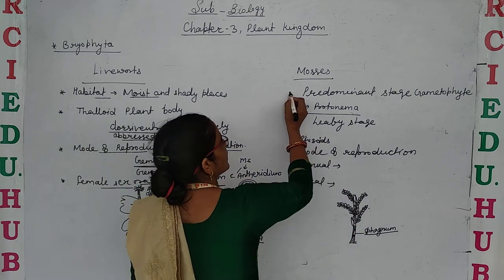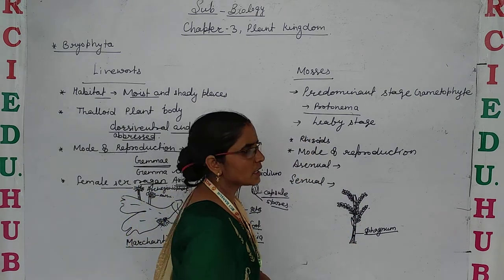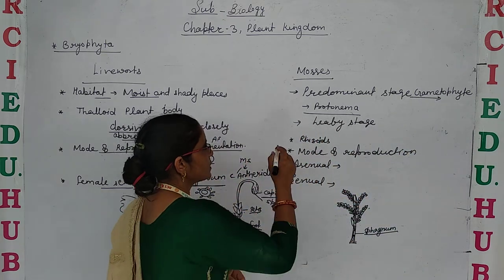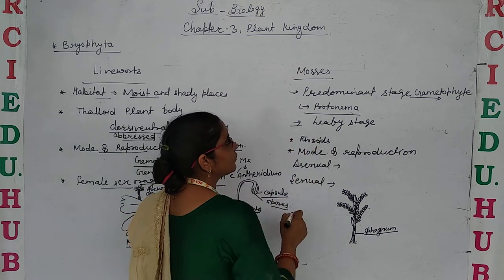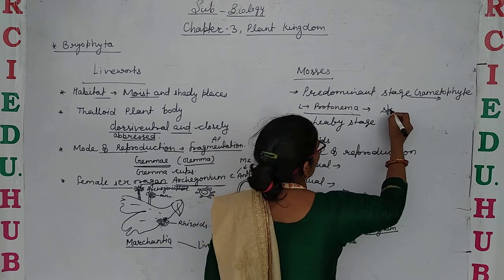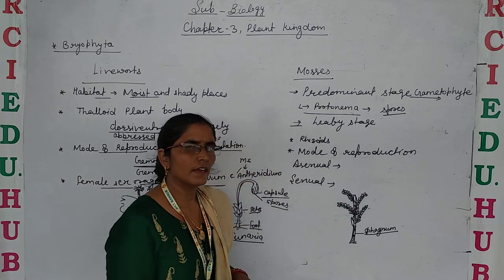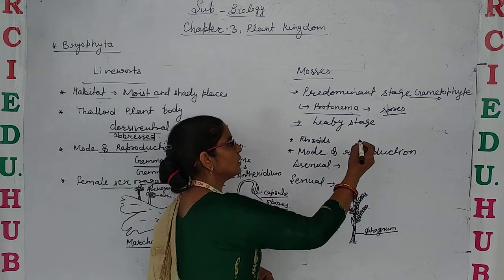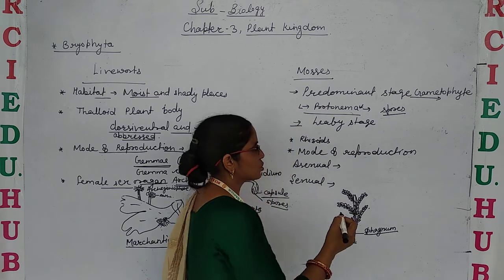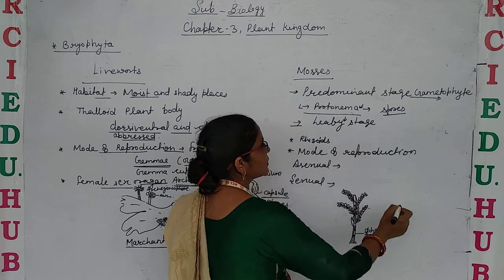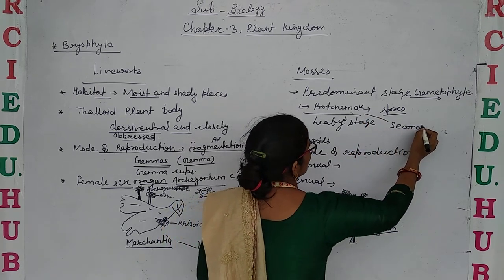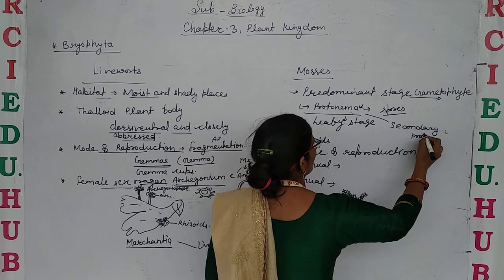Now if we discuss about the mosses, the predominant stage is the gametophytic stage or gametophyte. This gametophyte is divided into two stages: one is protonema and the second is the leafy stage. Protonema is directly formed from the spores after meiosis division. When meiosis division takes place in the spores, it forms the first stage which is a green, creeping structure. The second stage is the leafy stage, which is developed from the secondary protonema.